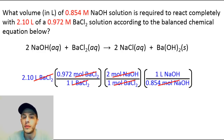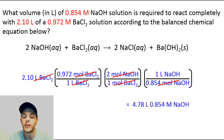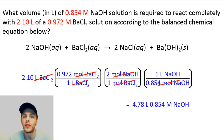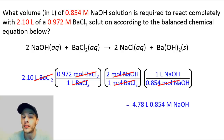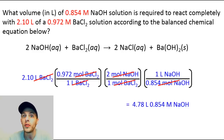After crunching this into a calculator and keeping three significant figures, the result is 4.78 liters of 0.854 molar NaOH. That is solution stoichiometry in a nutshell — it's quite similar to the mass-to-mass conversions from stoichiometry, only instead of going from mass to moles using molar mass, we're going from volume to moles using molarity as our conversion factor. I hope this video helped you out. If you have any questions, make sure to submit a comment. You guys have a great day!